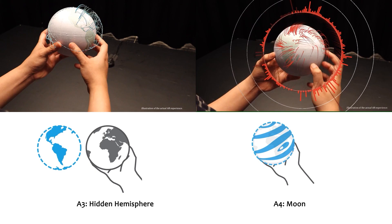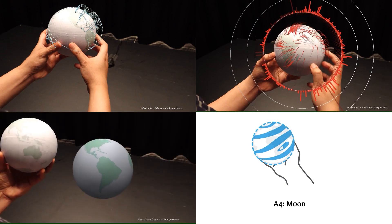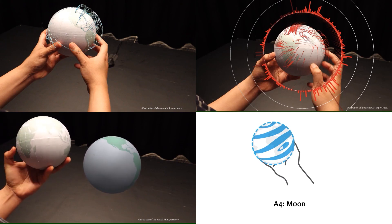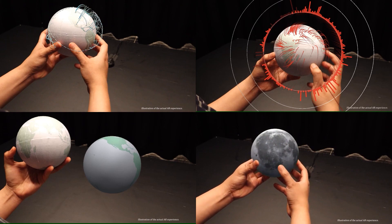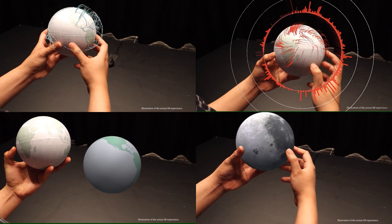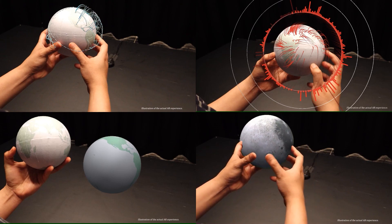One limitation of the globe is that we can only see half of the geospatial information. In the third use case, we show the hidden hemisphere with a virtual globe next to the tangible globe. The last use case overlays geospatial information and non-geospatial information on the surface of the tangible globe. These use cases differ in various aspects including visualization idioms, reference frames, and rotation constraints.